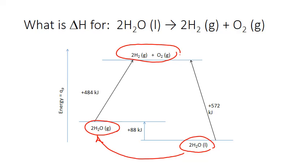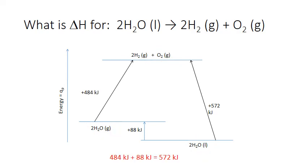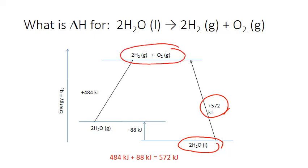It turns out that the amount of heat added doesn't change whether we do this in one direct step or in two steps. That's because 484 plus 88 kilojoules equals 572 kilojoules — the exact same amount that we got for our one direct step. So enthalpy is a state function. The change in enthalpy for any reaction depends only on the enthalpy of our starting point (our reactants) and the final enthalpy of our products.